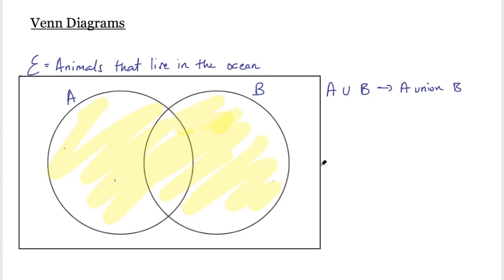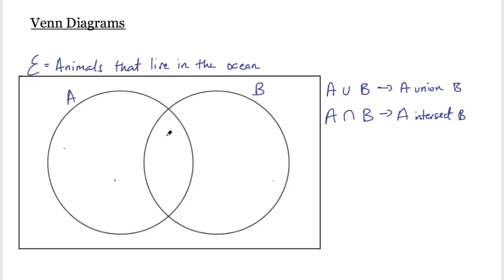If I wanted to know what's common to both sets, I would write that as A with an upside-down U, then B. This is said as A intersect B, and that's this region in the middle. One way to think about this is the union symbol means 'or' — in other words, A or B — and the intersection symbol means 'and', so it has to be in A and B in this middle section. That's one way to help you remember it.